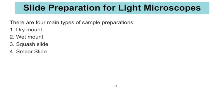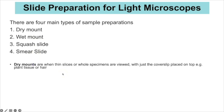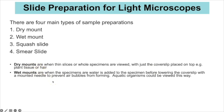With light microscopes there are four types of slide preparation: dry mount, wet mount, squash slide, and smear slide. Dry mounts are when thin slices or even the whole organism are viewed — you place the specimen on the glass slide with a cover slip on top. This might be used when examining a thin slice of plant tissue, or you might have tried this with your own hair.